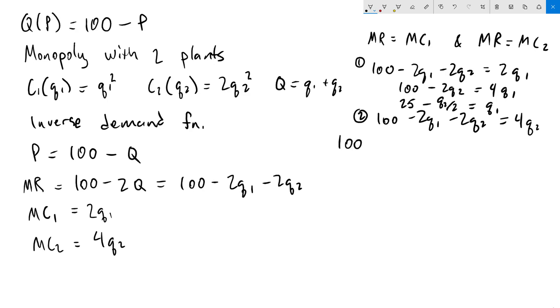So what I get is 100 - 2Q₁, now I'm going to put in (25 - Q₂/2), minus 2Q₂ = 4Q₂. You can see that now I have an equation with just Q₂ in it, so we can now solve this.